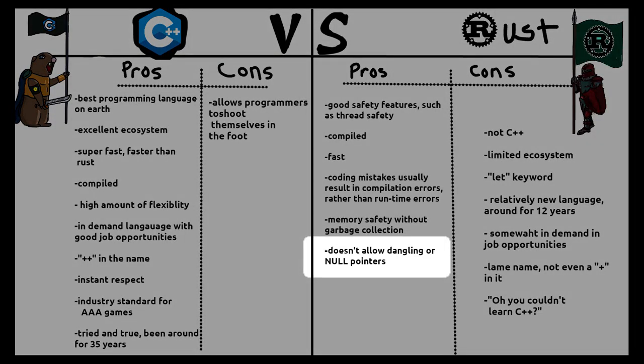Rust takes a more hand-holding approach — it enforces strict rules that prevent such occurrences. For example, Rust doesn't allow dangling or null pointers. It achieves this by enforcing a strict ownership policy where only one variable or pointer can own a set of data at a time. This is achievable with C++ as well using smart pointers or unique pointers, but in C++ you have the choice not to. Rust forces you to, which improves safety but reduces programmer control.